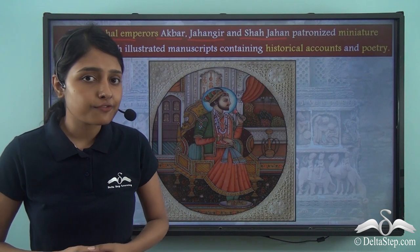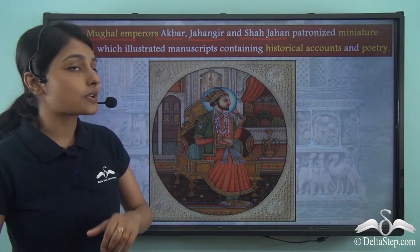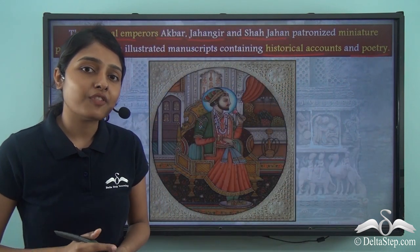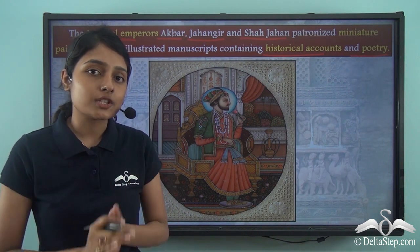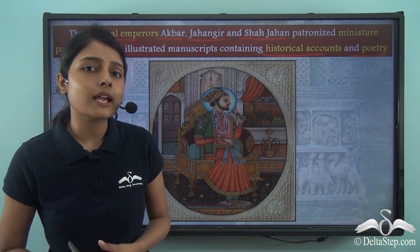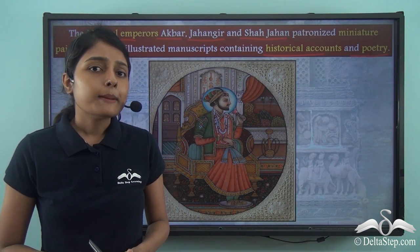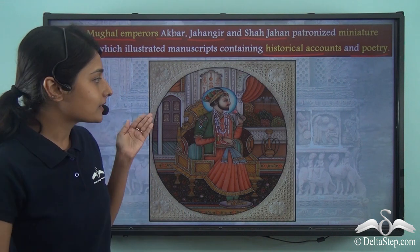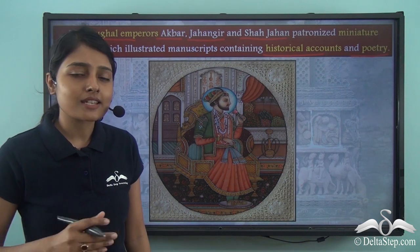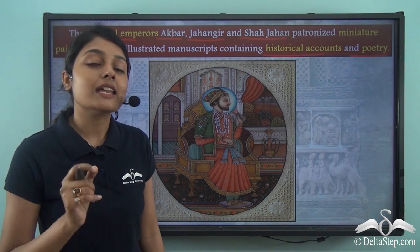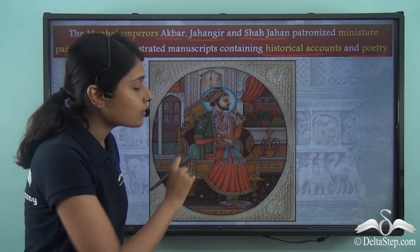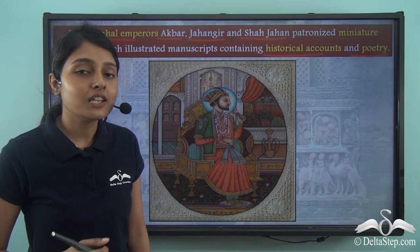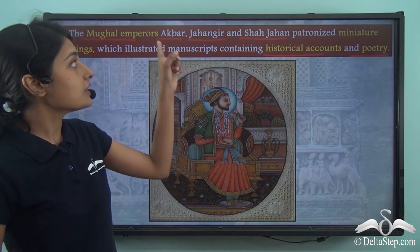These miniature style paintings were used to illustrate different manuscripts containing historical accounts or poetry, with miniature paintings made on the sides of the pages. During the Mughal period, these paintings were sometimes as small as a few square inches. But despite being very small in size, the artists did not leave out crucial details — these paintings were very minutely and intricately done, with even the most minute details very well taken care of.